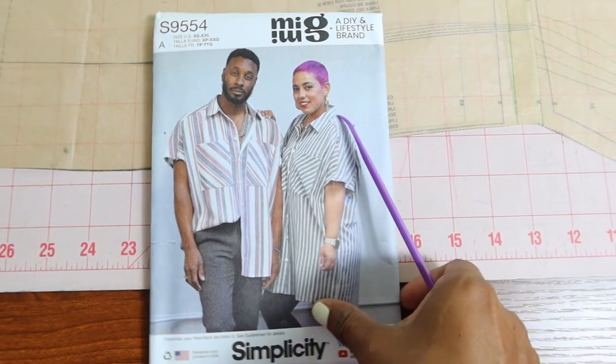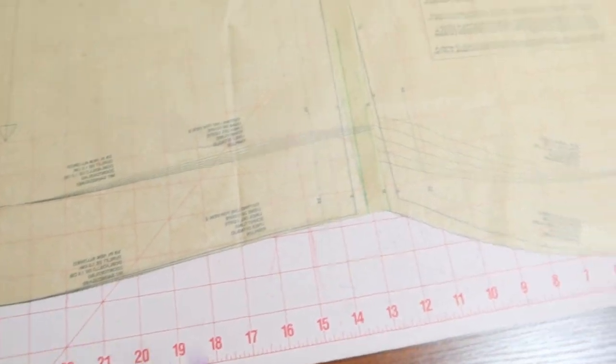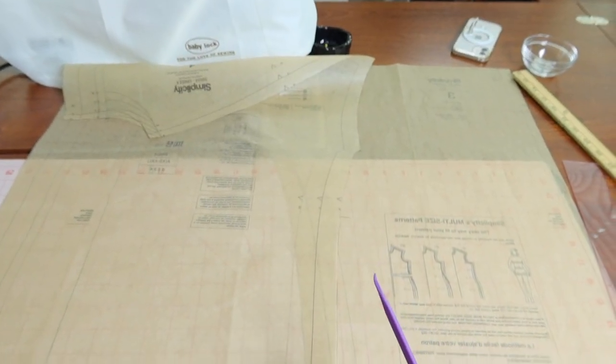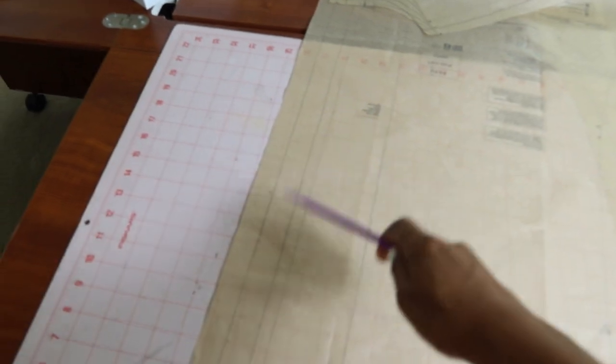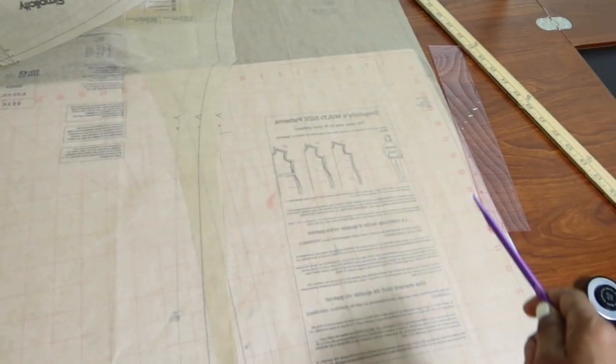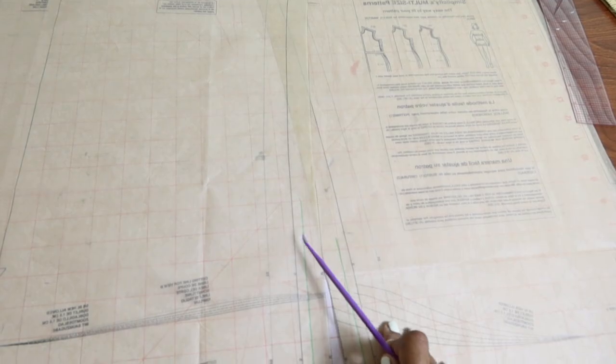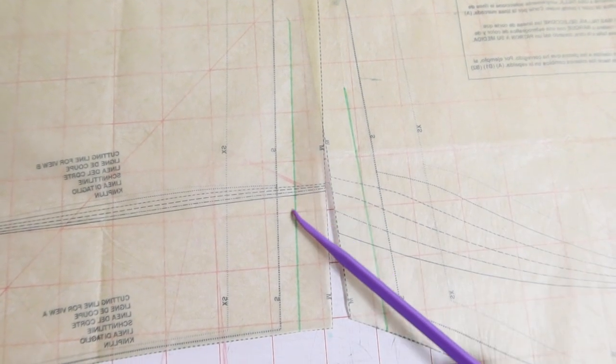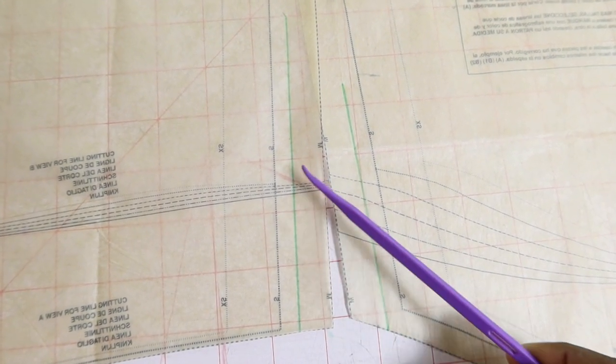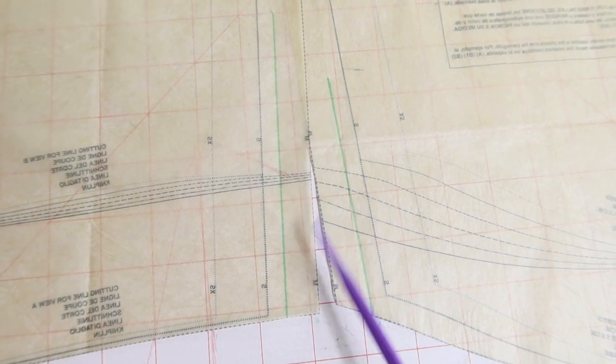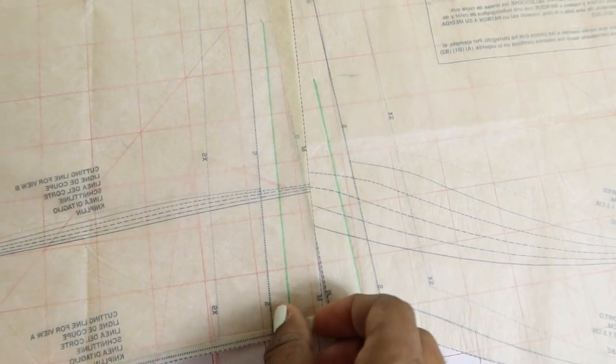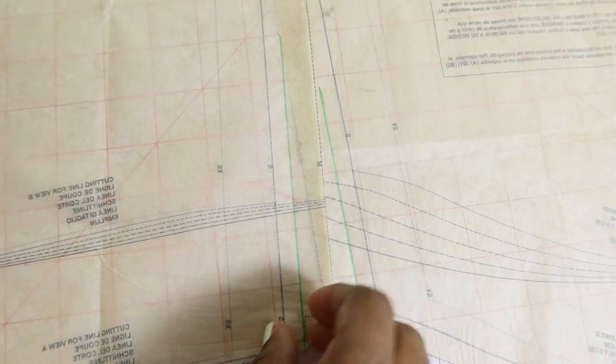I have the pattern pieces flipped upside down so I can line up the side pieces. This is the center front on both pieces, and these are the side seams. I drew the stitching line, which is 5/8 of an inch away from the edge on both pieces, and I'm going to line up these pieces making sure the green lines are on top of one another.